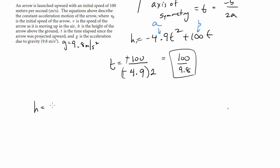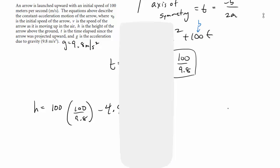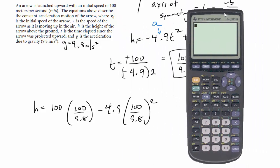And now we are going to find the height by plugging this in for time into our equation here. So h equals 100 times 100 over 9.8 minus 4.9 times 100 over 9.8 squared. So let's go ahead and find out my answer here.